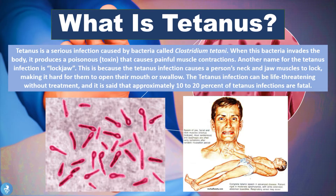Tetanus is a serious infection which is caused by a bacteria called Clostridium tetani. When this bacteria invades the body, it produces a poisonous toxin that causes painful muscle contractions. Another name for the tetanus infection is locked jaw or trismus, and this is because the tetanus infection causes a person's neck and jaw muscles to lock, making it really hard for them to open their mouth or to swallow.